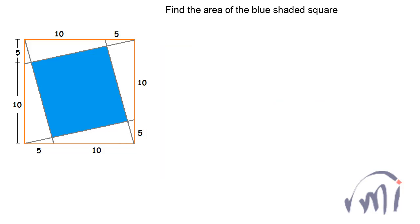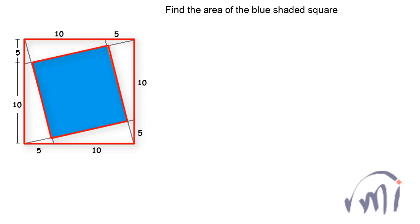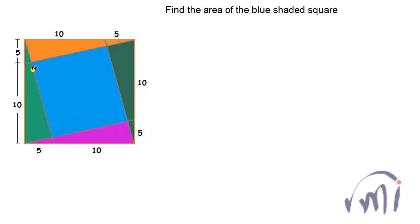In this problem we have a square whose dimensions are 15 by 15, and then we have drawn certain lines. Here we get a square which is shaded in blue and we have to find the area of this square. Inside the outer square we have another square shaded in blue, and we also have 1, 2, 3 and 4 triangles. There are also a few more smaller triangles, and all these triangles are congruent and are right angle triangles.